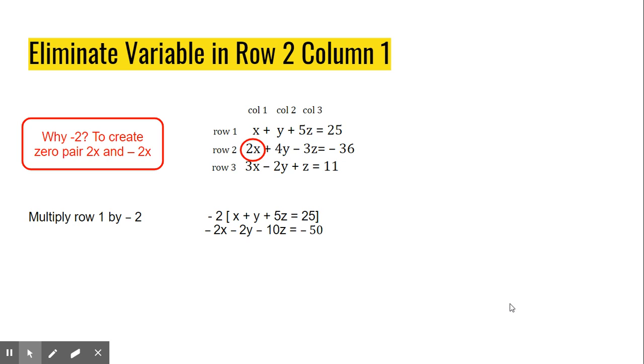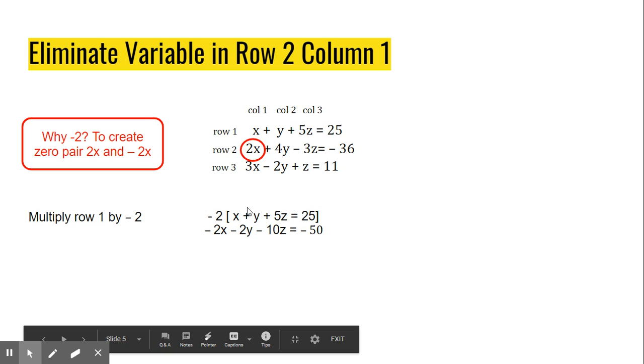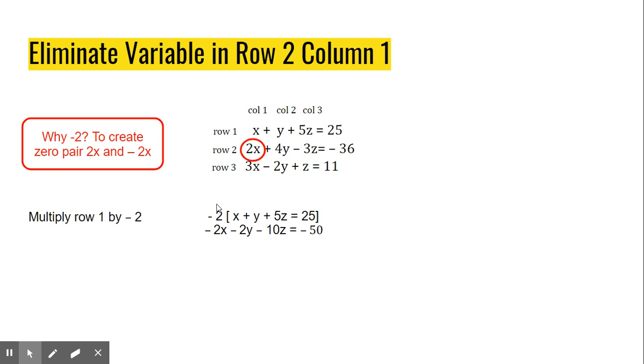The first thing we're going to do is eliminate that 2x. We want to eliminate the variable in Row 2, Column 1, first. So I'm going to multiply Row 1, the entire Row 1, everything on both sides of the equal sign, by negative 2. Why negative 2? Because later on, I'm going to use negative 2x and 2x as a zero pair. So I do that, and I get this equation here that has been multiplied by negative 2.